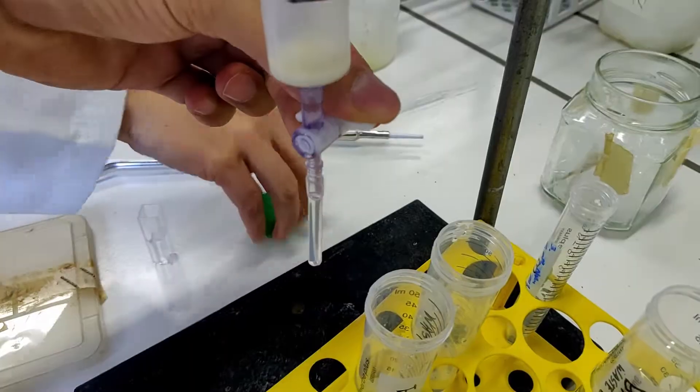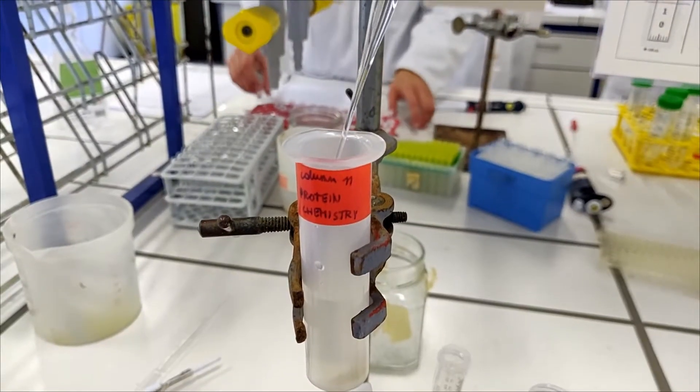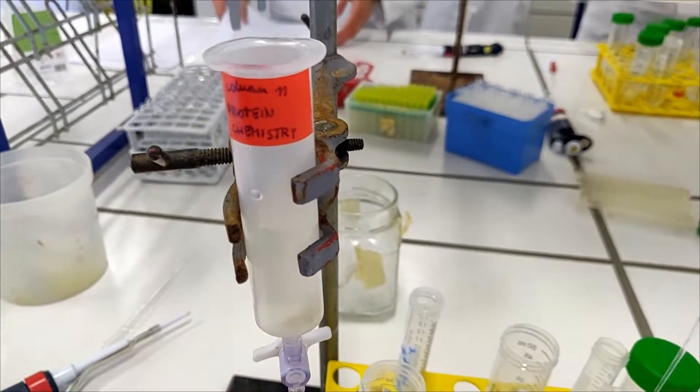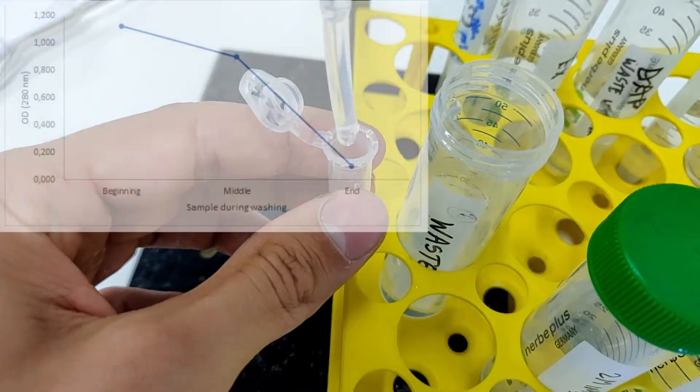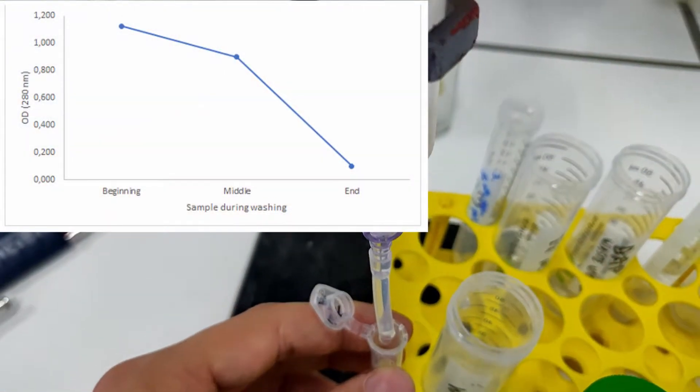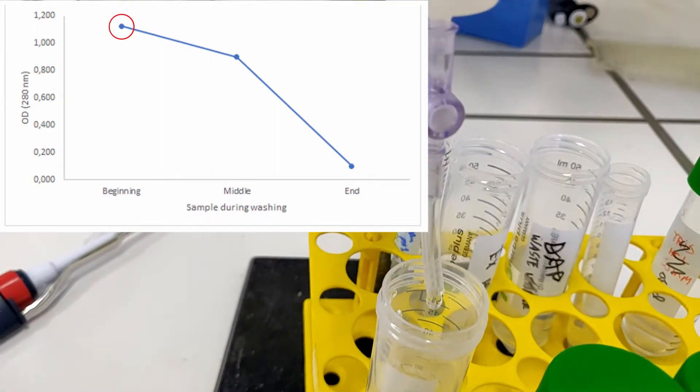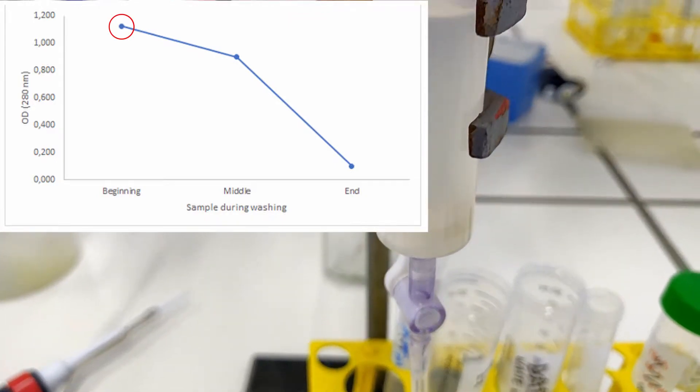Next, I closed the column and filled it to the brim with a washing buffer. The washing buffer removes everything that is not bound to, and is still left in the column. Samples taken from this flow-through should show a decreasing OD profile, because in the beginning, there are a lot of contaminants that are washed away, and towards the end, few remain.